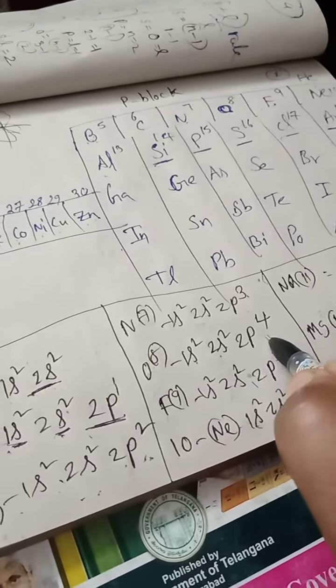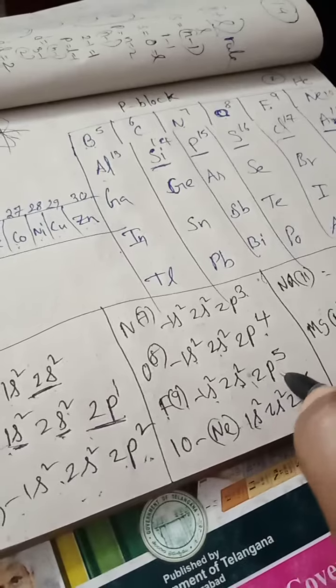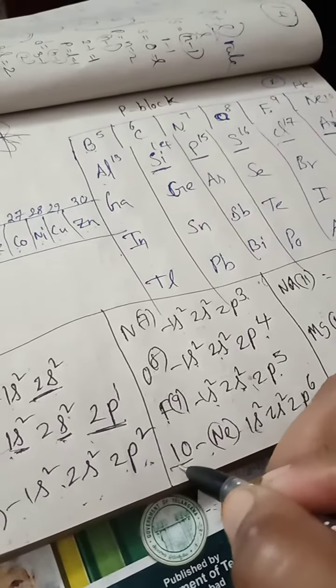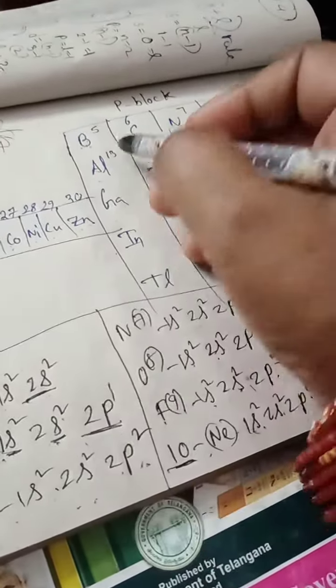Fluorine, atomic number 9: 1s² 2s² 2p⁵. Neon, atomic number 10: 1s² 2s² 2p⁶. All the valence electrons are filled in the p shell.